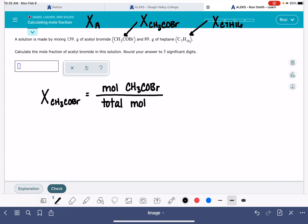So in order to solve this problem, we need to figure out how many moles we have of acetyl bromide and also how many moles we have of heptane. We'll do that by doing a gram-to-mole conversion.